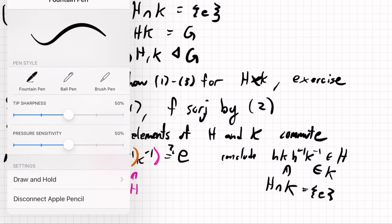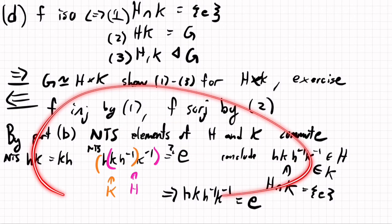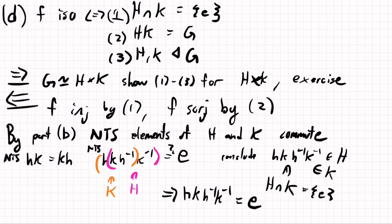So the final conclusion is that hk h inverse k inverse equals the identity. And so that shows that they commute, and that shows that this is a homomorphism. So it's an injective, surjective, so it's a bi-injective homomorphism, thus an isomorphism. You're welcome. Thank you.